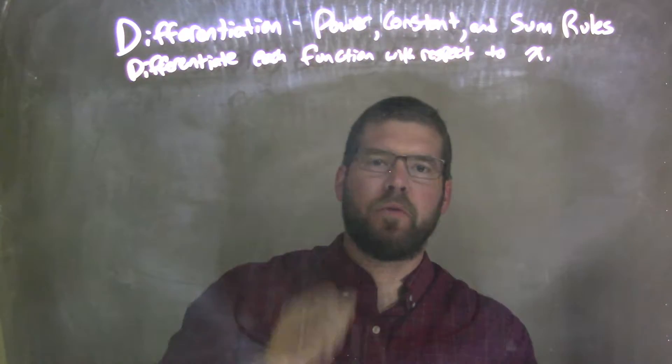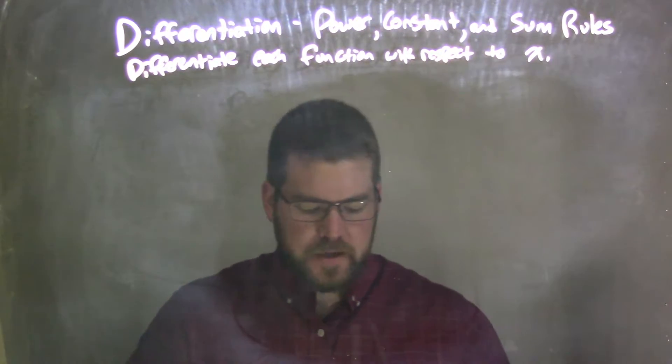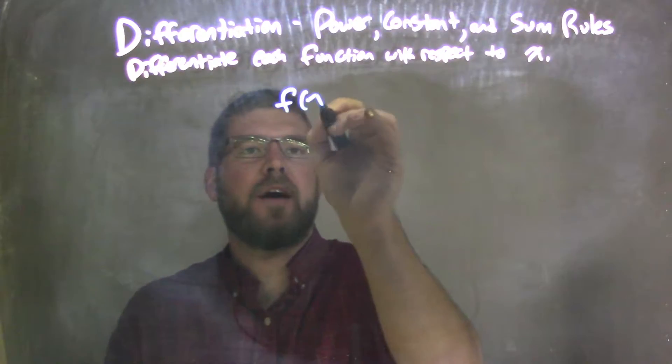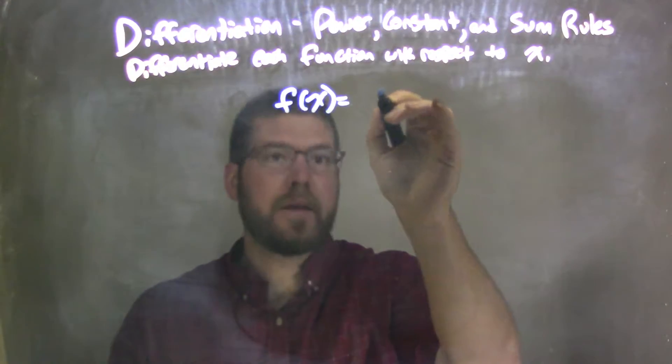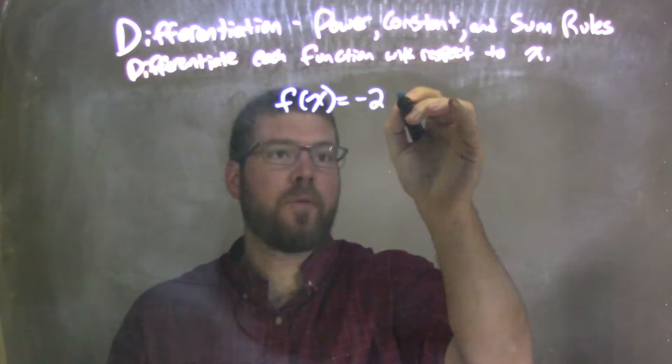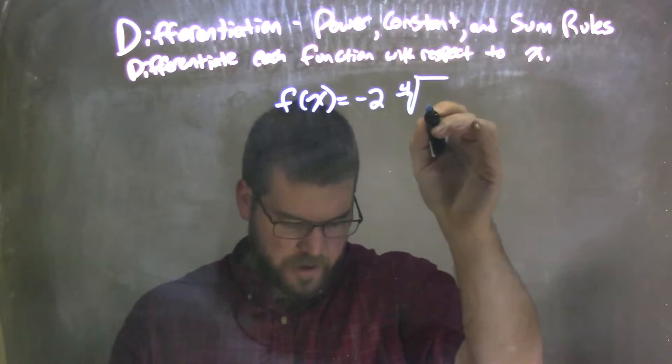We're going to differentiate each function with respect to x. So if I was given this function, f of x is equal to negative 2 times the fourth root of x.